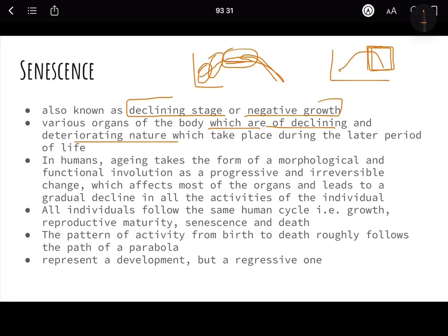Kidney function reduces, heart function reduces, eyesight reduces, hearing loss happens, your muscles, knee pain starts, all of that starts to happen. In humans, aging takes form of a morphological and functional involution as a progressive and irreversible change. You can see functional ability also declines. All those things happen in aging and senescence. It affects most of the organs and leads to a gradual decline in activities of the individual. For example, when you were an adult you could run miles, but in old age you will be barely able to walk. This is the functional decline or negative growth that a body sees beyond a period.